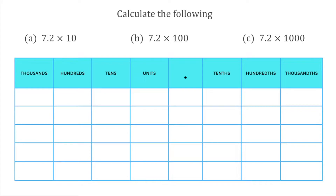When we multiply by 10 we move the digits in our number one space to the left because there's one zero in the number 10. When we multiply by 100 we move all the digits two spaces to the left, and when we multiply by 1000 we move all the digits three spaces to the left. This would also work for larger numbers like 10,000, 100,000 and even a million, but these are just the examples we're going to look at today.